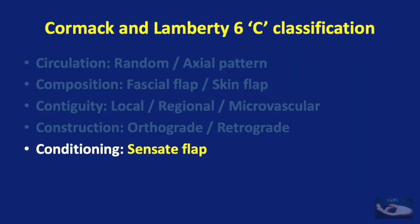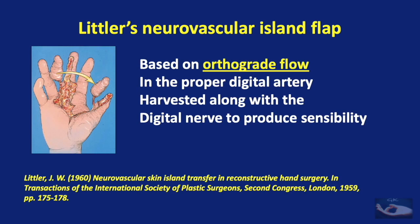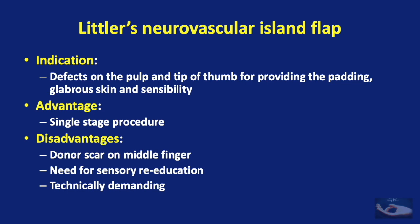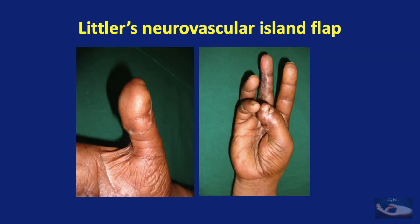According to Cormac and Lamberti's classification, flaps can also be conditioned — for example, made into a sensate flap. The classic example is the Littler's neurovascular island flap, based on orthograde flow in the proper digital artery and harvested along with the digital nerve to produce sensibility. It is ideally indicated for defects on the pulp and tip of the thumb, providing padding, glabrous skin, and sensibility. However, sensory re-education is needed so that the patient appreciates sensation on the thumb rather than on the donor middle finger.